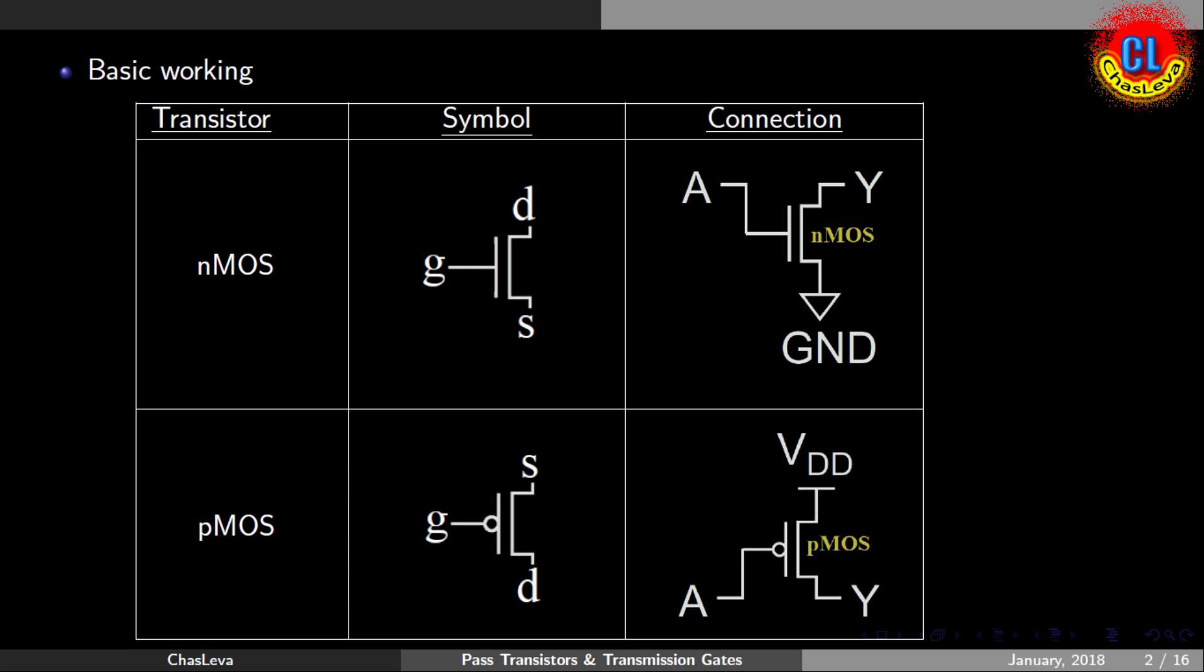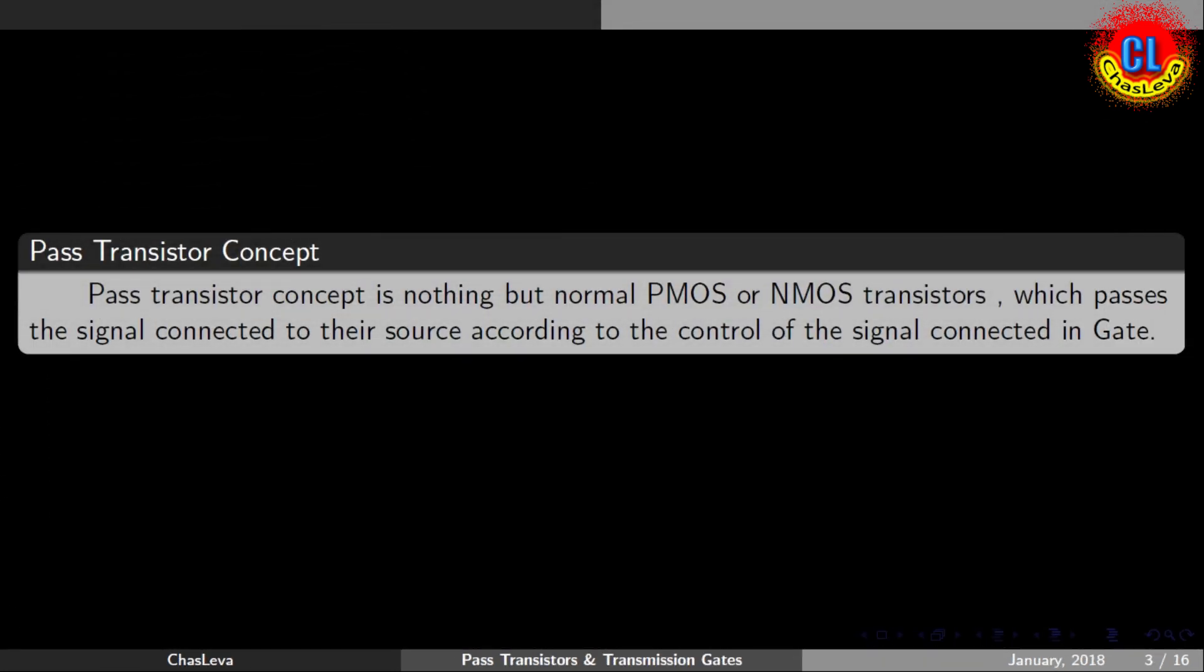Now we can say that for the case of both NMOS and PMOS, under the control of the input signal given to gate terminal, the source voltage will pass to drain terminal. Thus they are termed as pass transistors. Pass transistor concept is nothing but normal PMOS or NMOS transistors which pass the signal connected to the source terminal according to the control of the signal connected to gate.